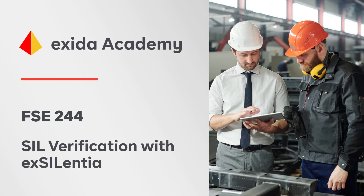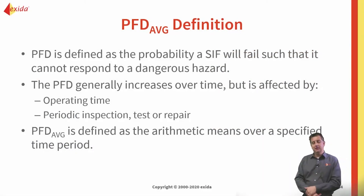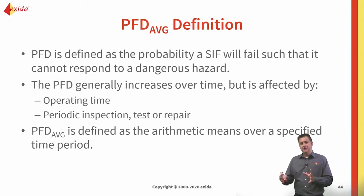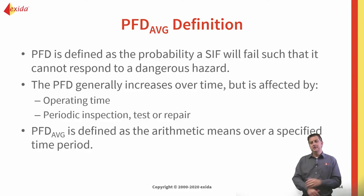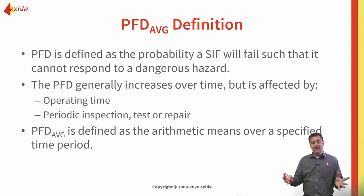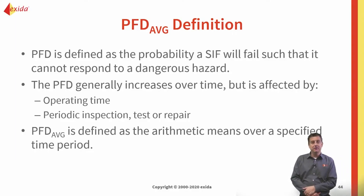The average probability of failure on demand is the parameter that we tend to calculate in order to determine our achieved SIL level. The probability of failing dangerous is defined as the probability that the SIF will not perform its intended function when it's asked to do so. If you have a hazardous scenario in your plant and you need to go to the safe state, but your safety function doesn't do that, that is failing dangerous. We calculate that probability and use it to determine the achieved SIL level.